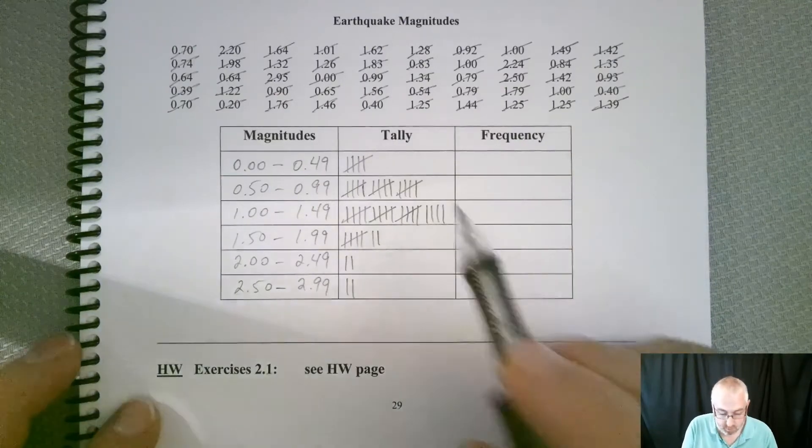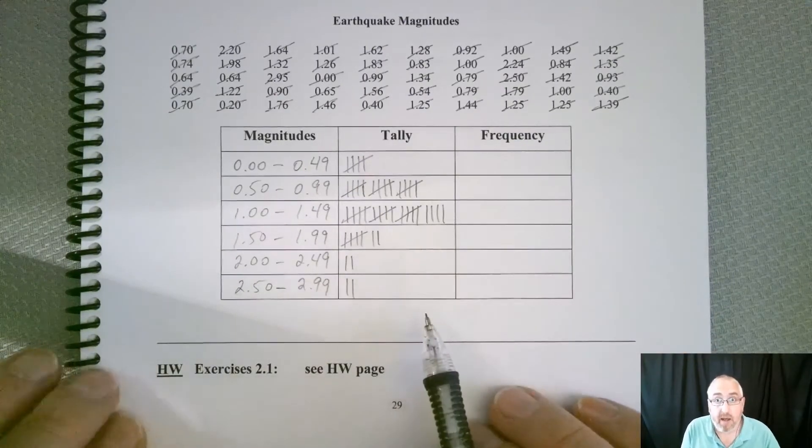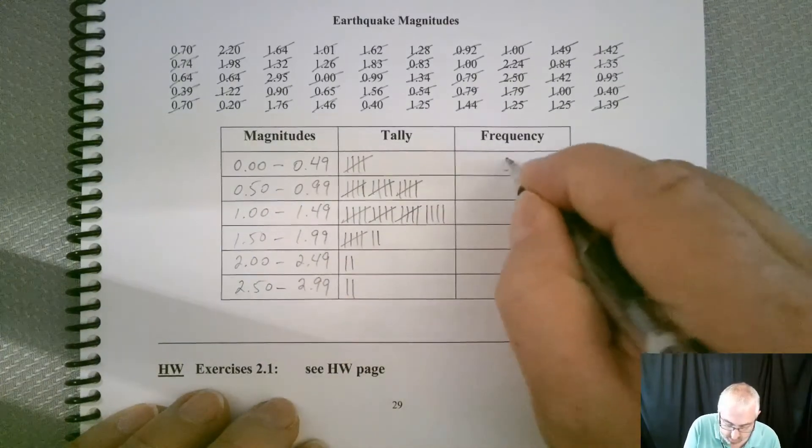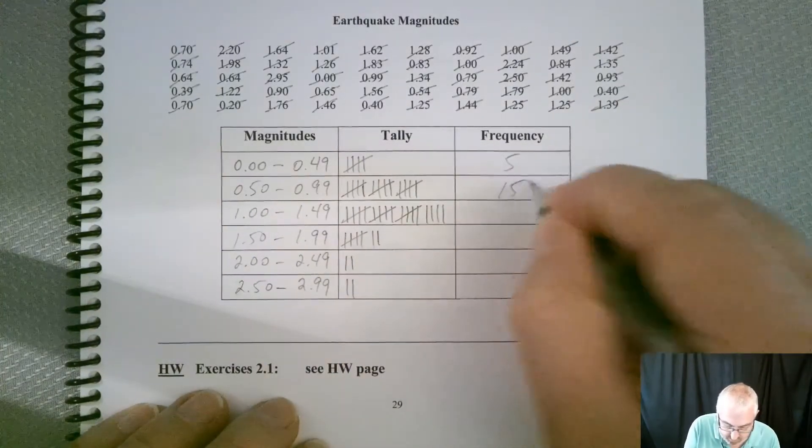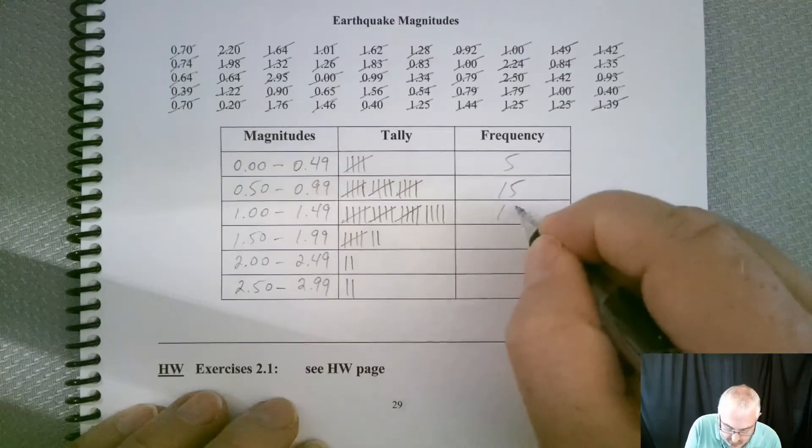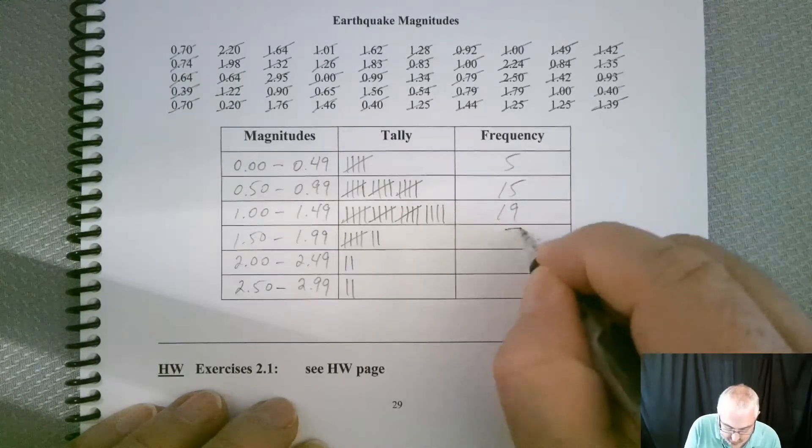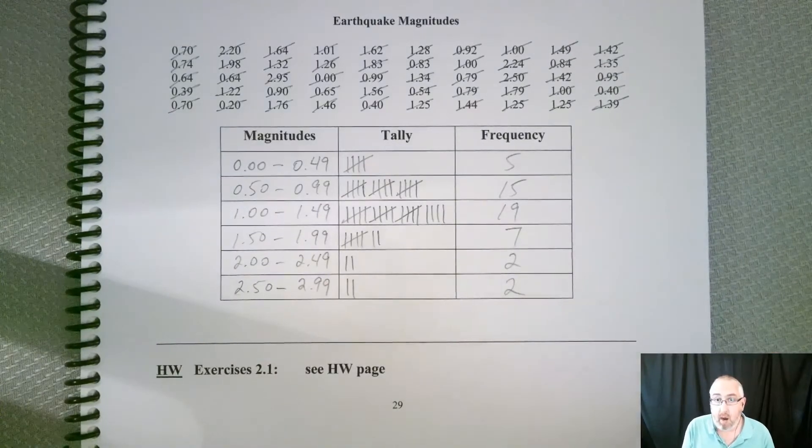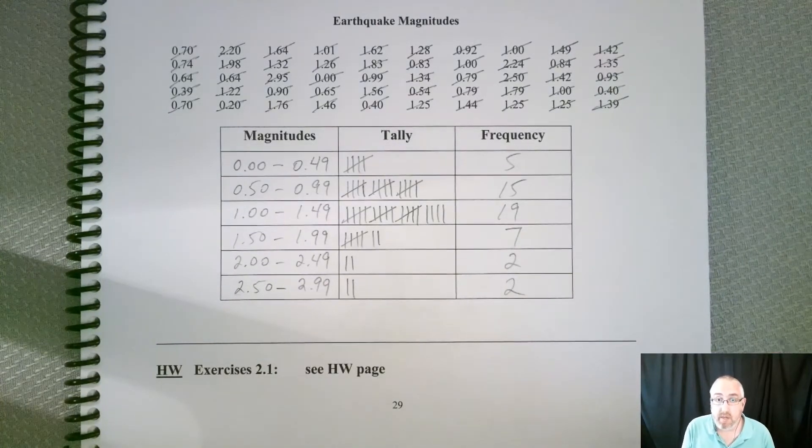So you can see, if you get all of your tallies done, this is what we should end up with. So we've got a 5 here, we've got 15, looks like we've got 19, 7, 2, and 2. So there's our frequencies.